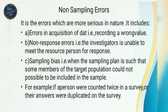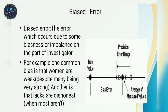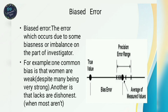Sampling bias occurs when the sampling plan is such that some members of the target population could not be included in the sample. This is sampling bias, and it is also classified as a non-sampling error.